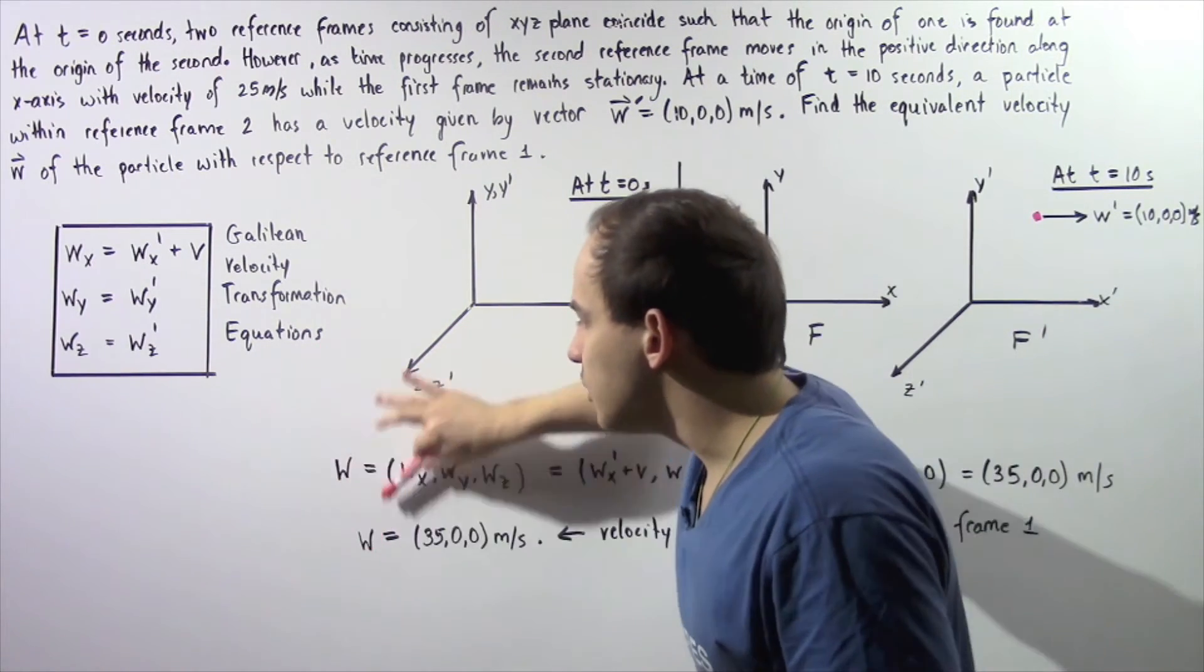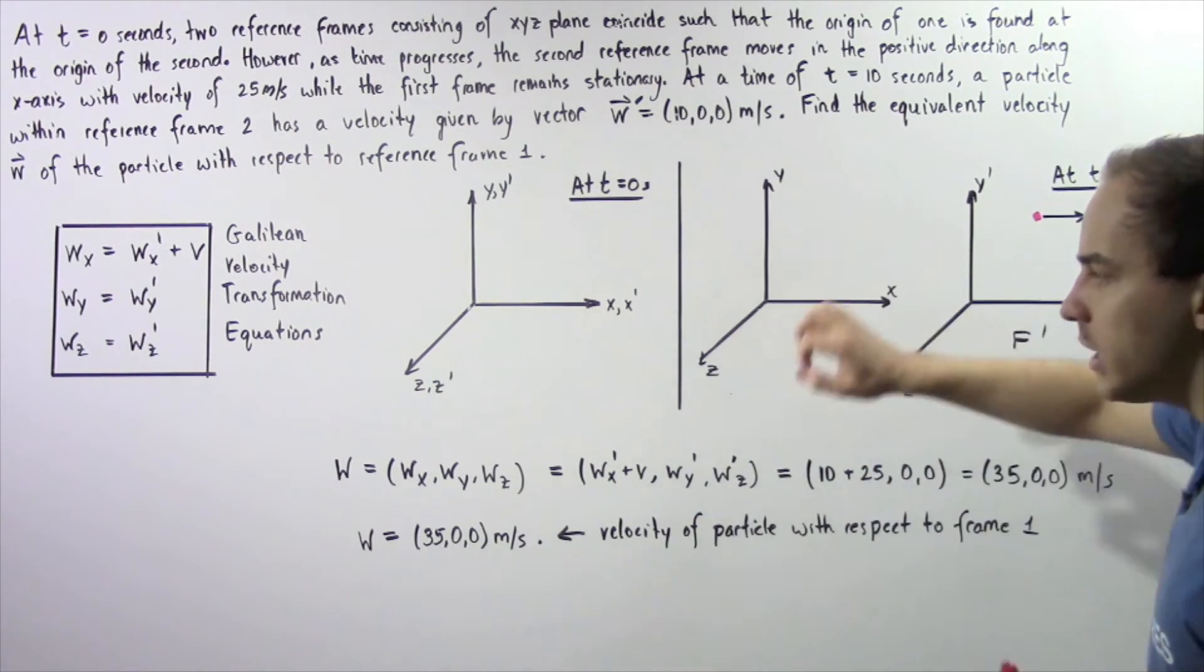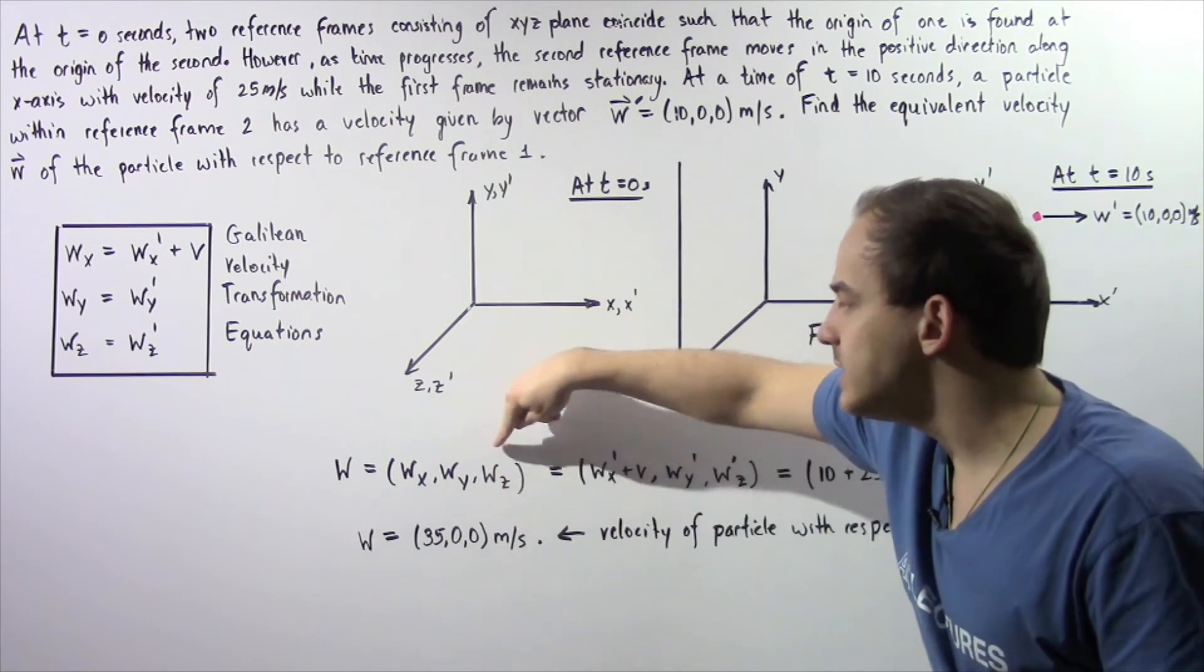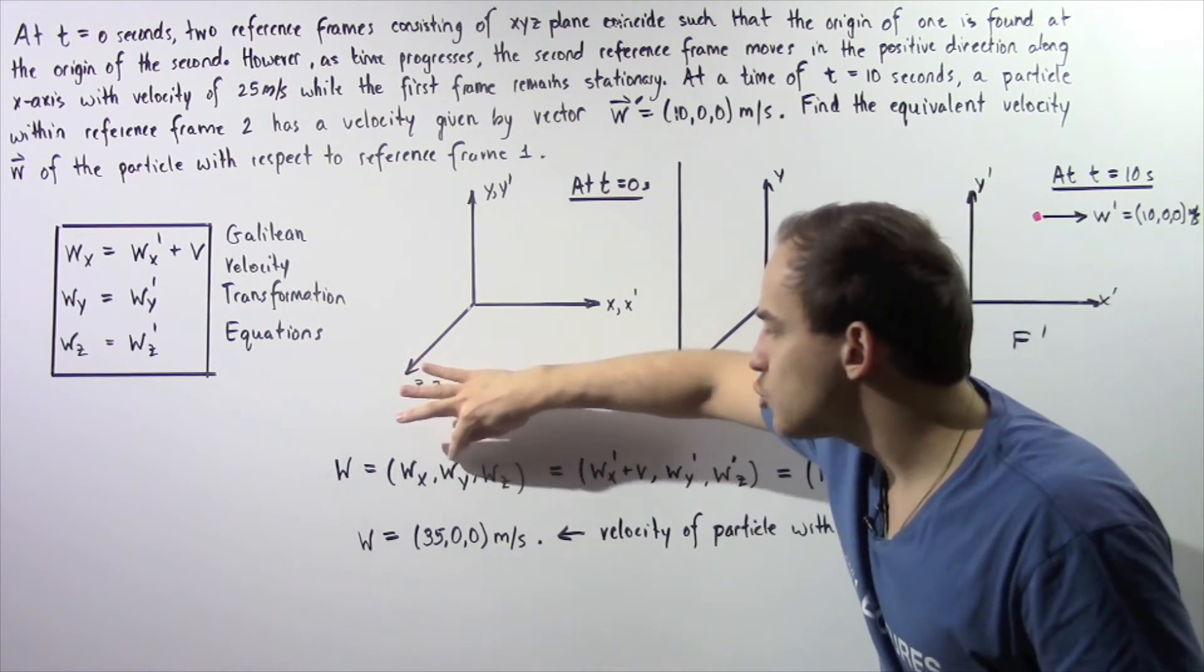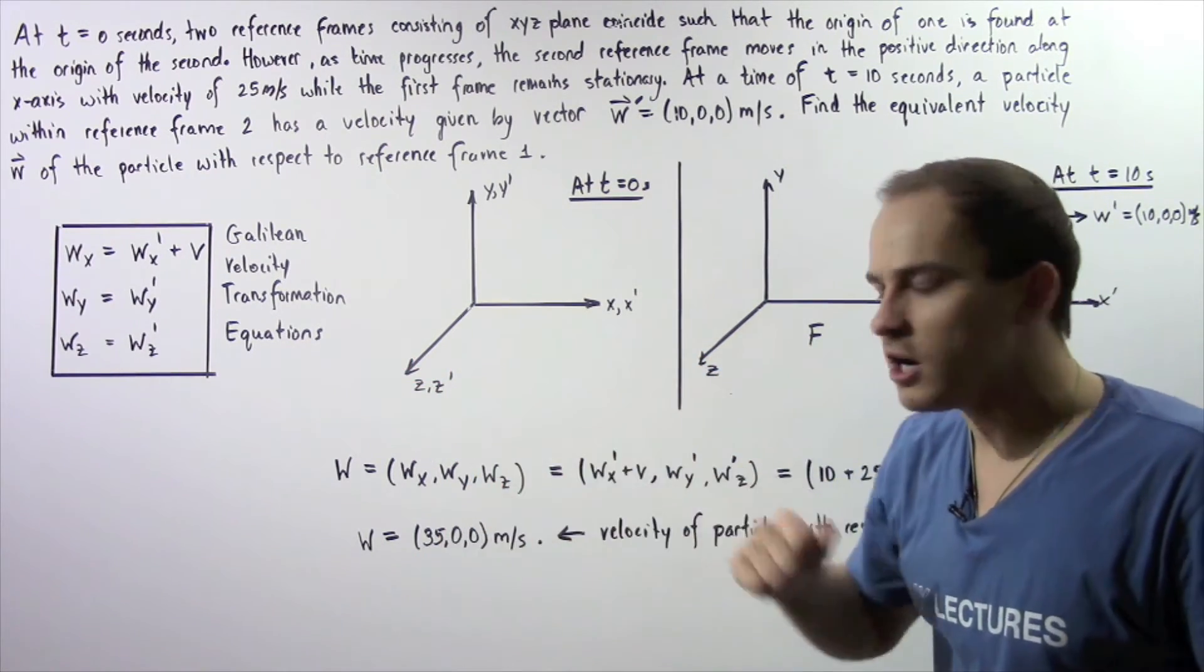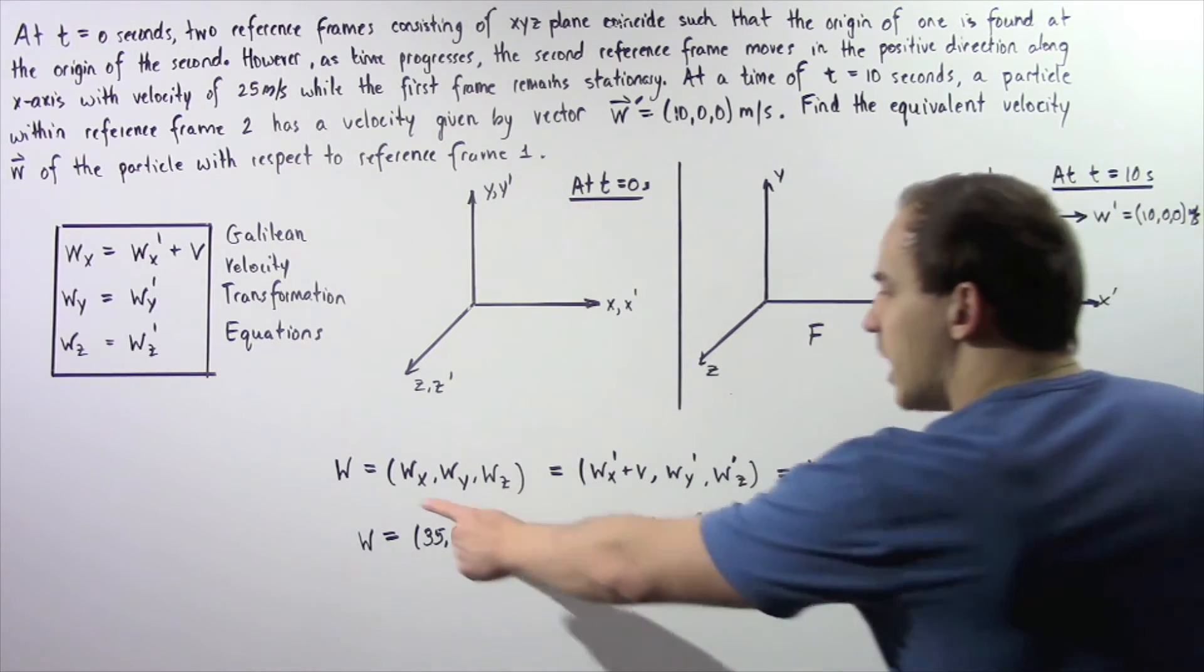So w, which is our velocity of this particle within frame one, is equal to w_x, w_y, and w_z, where each one of these quantities represents the velocity of that particle with respect to each component.